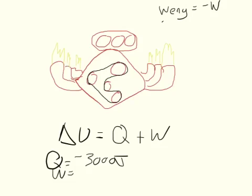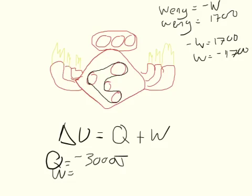So if the work of the engine on the environment equals 1,700, then negative W equals 1,700, and W equals negative 1,700 joules. So W is negative 1,700 joules of energy done on the engine.